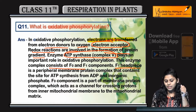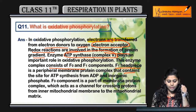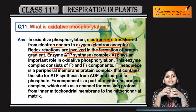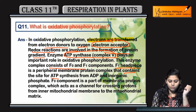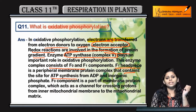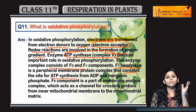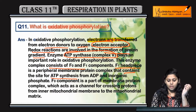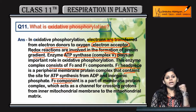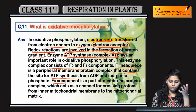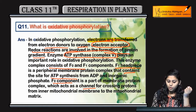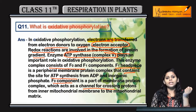The F1 component contains the main site for the synthesis of ATP, where ATP and inorganic phosphate are used. The F0 component is another part of the membrane protein complex, which acts as a channel.